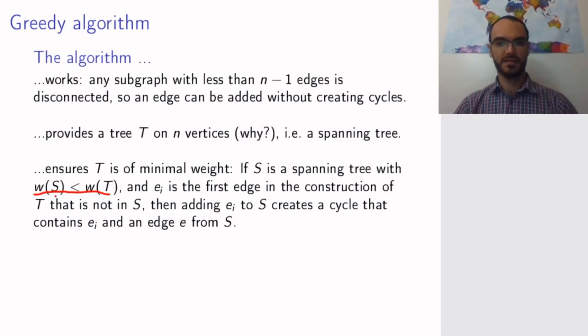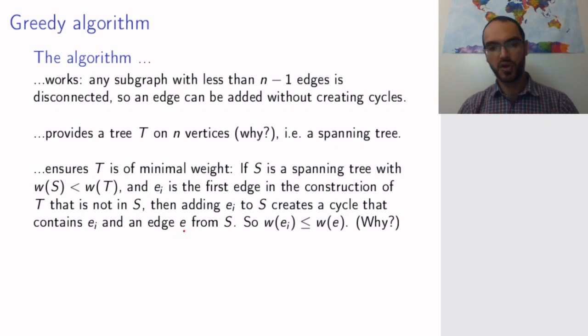Since w of S is strictly smaller than w of T, this means that S is a different tree. So at some point when I created T, I added an edge ei that is not in S. Look at the first time this happened, the first edge ei that I added that was not in my tree S. If I add ei to the tree S, I would create a cycle. Because remember, a tree is such that if you add any edge, you create a cycle. So now you have a cycle containing this edge ei and an edge from S itself. But then the weight of ei is smaller than or equal to the weight of the edge from S. Pause and think.